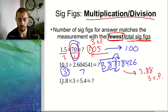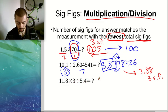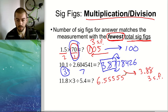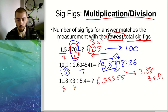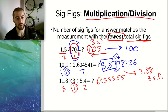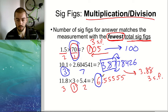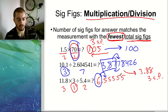For the last multiplication/division example, 11.8 times 3 divided by 5.4 gives 6.5555 repeating. We count sig figs in each number: 3, 1, and 2. The lowest is 1, so our final answer can only have one sig fig. One sig fig would be the 6, and we look at the next number to decide rounding — we have 0.555 repeating, so we round 6 up to 7. Our final answer is just 7, which has one sig fig.